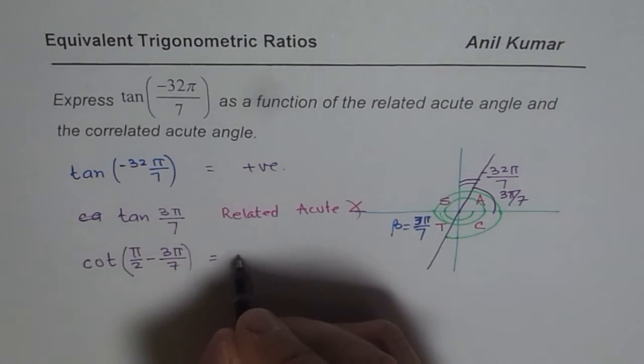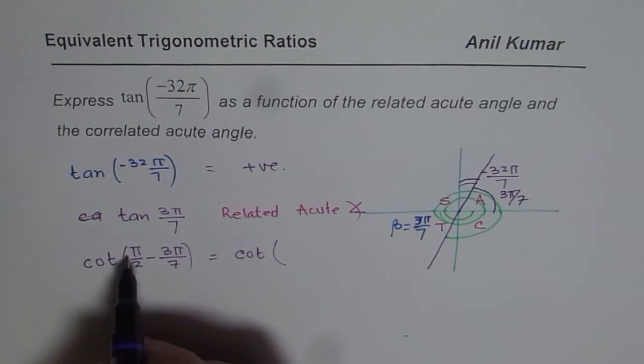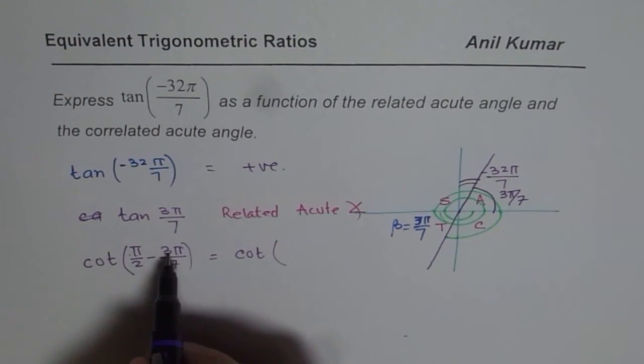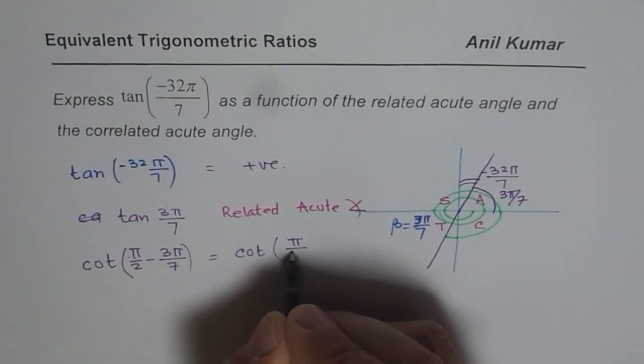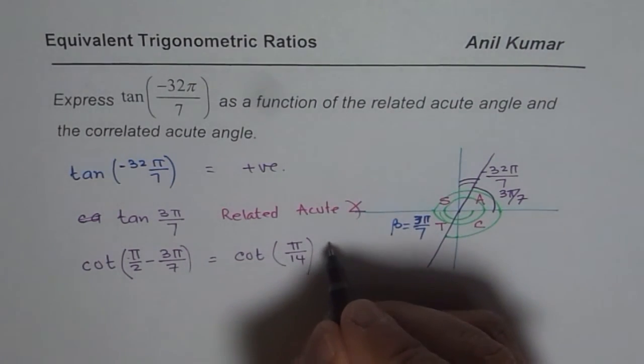How much is this angle? So it should be cotangent of 7 minus 6, right? So that is π by 14. So cotangent π by 14 will be your answer as a correlated acute angle.